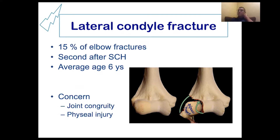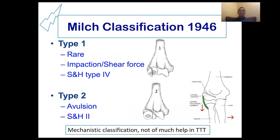This is different from supracondylar humeral fracture because there is a concern about joint incongruity and the congruity of the articular surface of the distal humerus. Also, it is a physial injury, so it has implications for later growth.